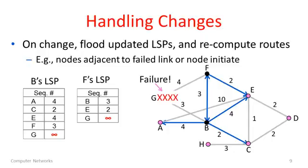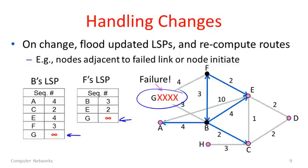When there's a failure, the nodes adjacent to the failed link or node will notice that something's changed. They'll send updated information and everyone who receives it will be able to recompute. For example, if node G fails, its neighbors B and F will eventually realize it's gone after exchanging hello messages with no answer. They can then issue updated link state packets, changing the cost from those nodes to reach G to infinity — meaning that link does not work. When that information is spread around, other nodes will recompute and find paths which do not go through G.